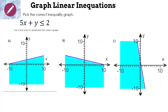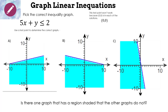Let's look at this one: pick the correct inequality graph for 5x + y ≤ 2. When I look at the options, the first thing I check is that they're all solid lines — because we have 'less than or equal to.' A, B, and C all have solid lines, so that doesn't help. Next we'd pick test point (0, 0), but the problem is that (0, 0) is in the shaded region for all three graphs, so it'll be true for all — that doesn't help either.